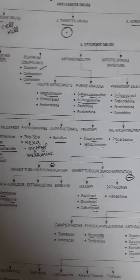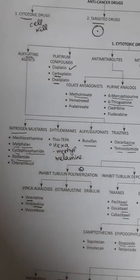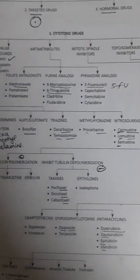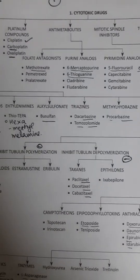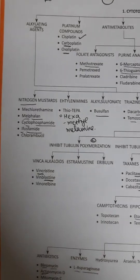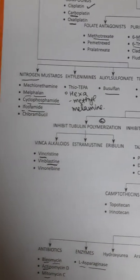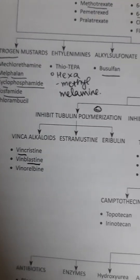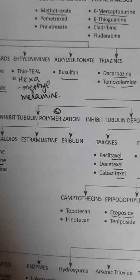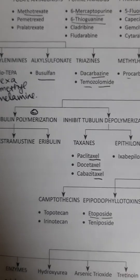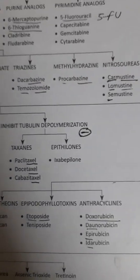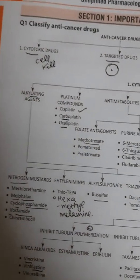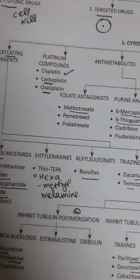Today we will learn about anti-cancer drugs. Anti-cancer drugs are cytotoxic drugs, targeted drugs, and hormonal drugs. Cytotoxic drugs include alkylating agents like nitrogen mustards — melphalan, cyclophosphamide, thiotepa — then busulfan, dacarbazine, procarbazine, carmustine. Then we have platinum compounds like cisplatin, carboplatin, and oxaliplatin.